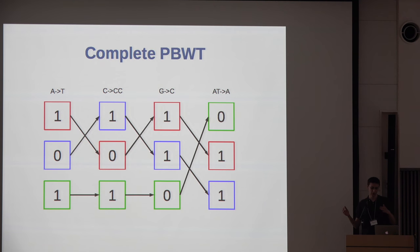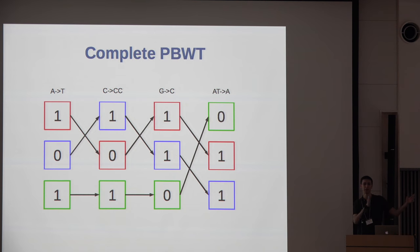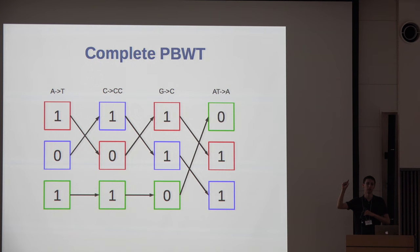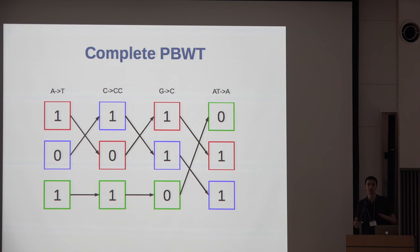This is pretty compressible because at every site the haplotypes are ordered by their reverse prefix leading up to that site. The upshot is that similar haplotypes are grouped together, which means they're likely to have the same value at the current site — so you can run-length compress it or use another efficient compression algorithm. This makes the whole dataset more compressible and allows you to fit it in a smaller amount of space.